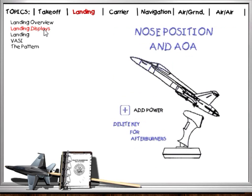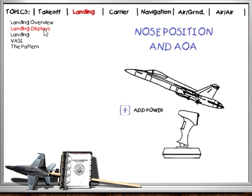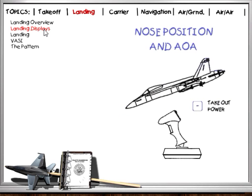Along with speed, nose position affects angle of attack. Climbing with no change in engine thrust decreases speed and you'll begin to slow. Get in the habit of adding power when making large backstick corrections, pushing the nose over to increase airspeed and decrease your AOA. Take out power as you make major nose-down corrections.